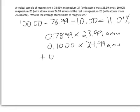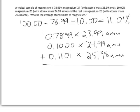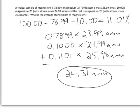And finally, I'll add that to the 11.01% of the magnesium-26. I multiply all those out, add them up, and my result is 24.31 atomic mass units.